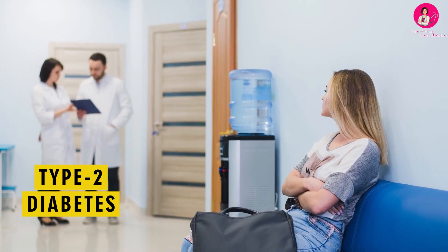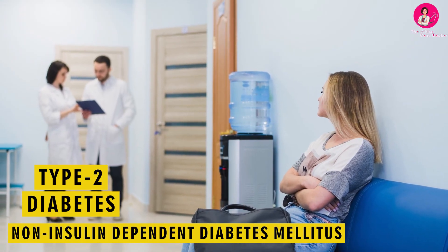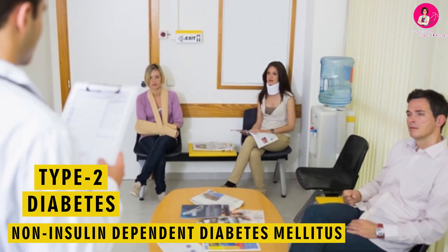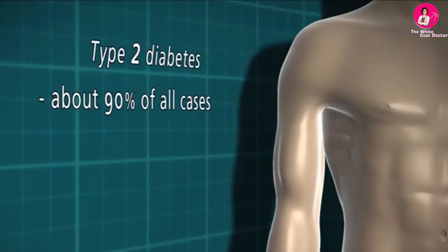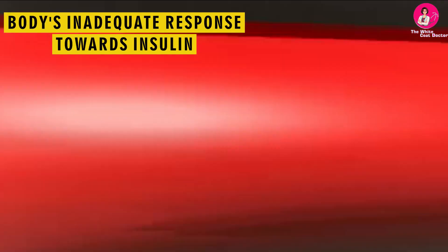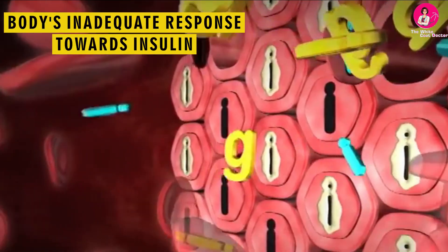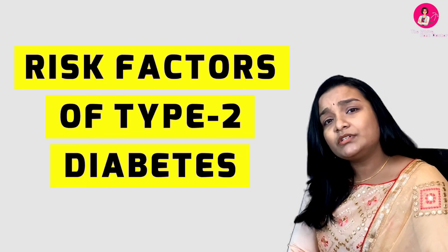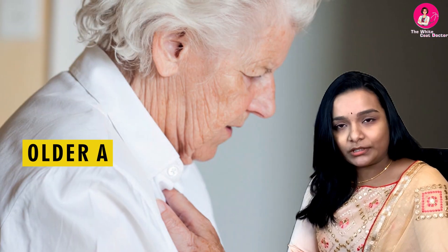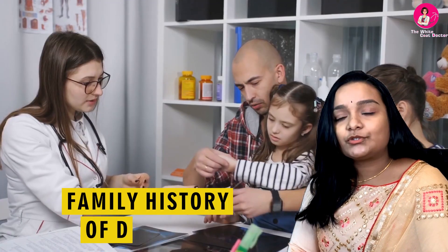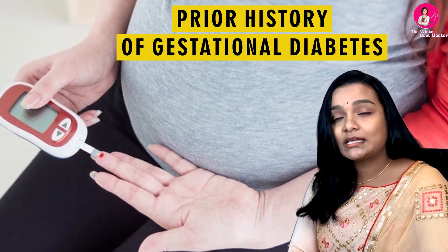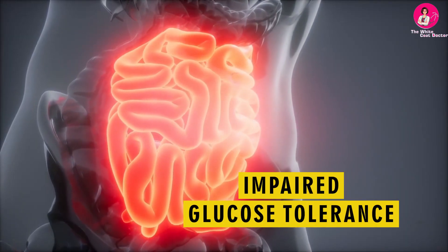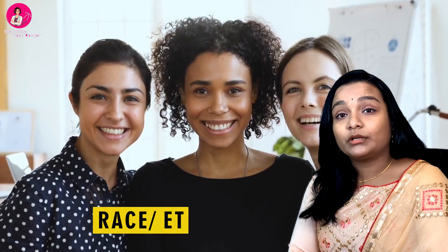Type 2 diabetes was previously called non-insulin dependent diabetes mellitus or adult onset diabetes. It accounts for almost 90 to 95 percent of all forms of diabetes. It occurs due to the body's inadequate response to available insulin, which we term insulin resistance. Risk factors for type 2 diabetes include older age, obesity, family history of diabetes, prior history of gestational diabetes, impaired glucose tolerance, physical inactivity and race or ethnicity.